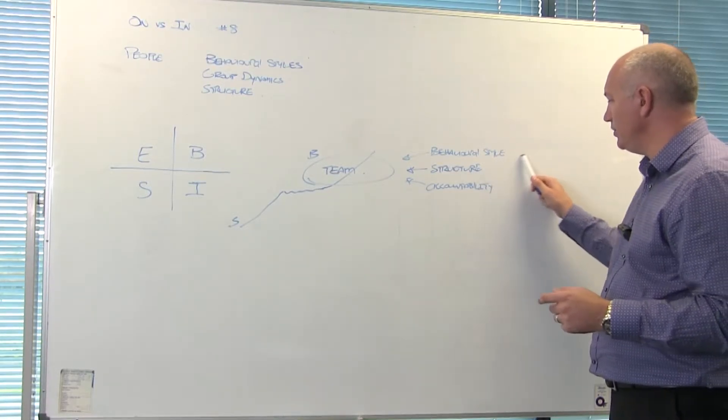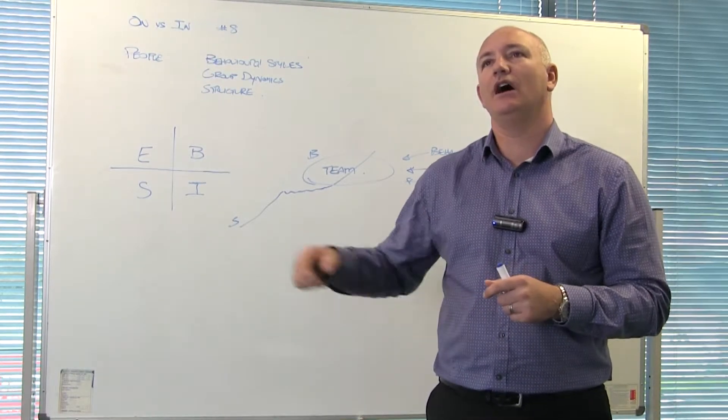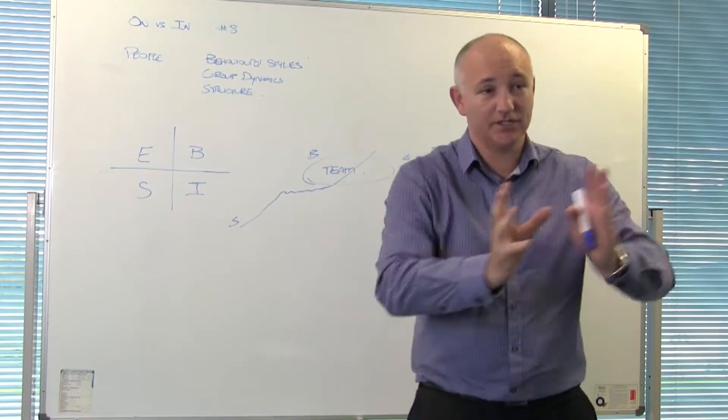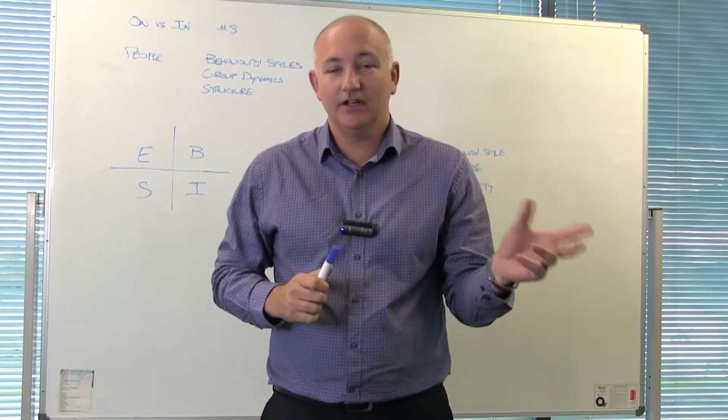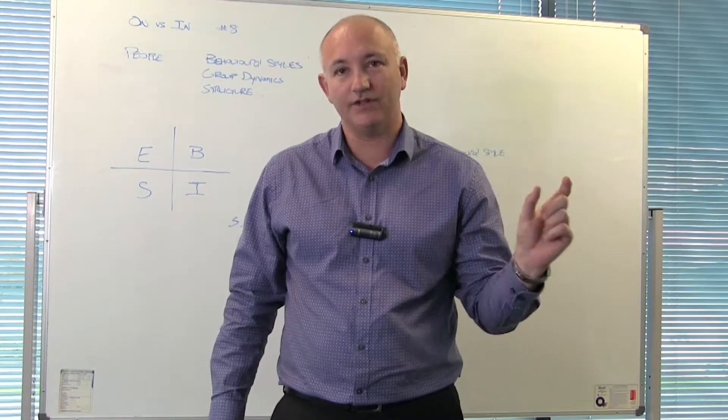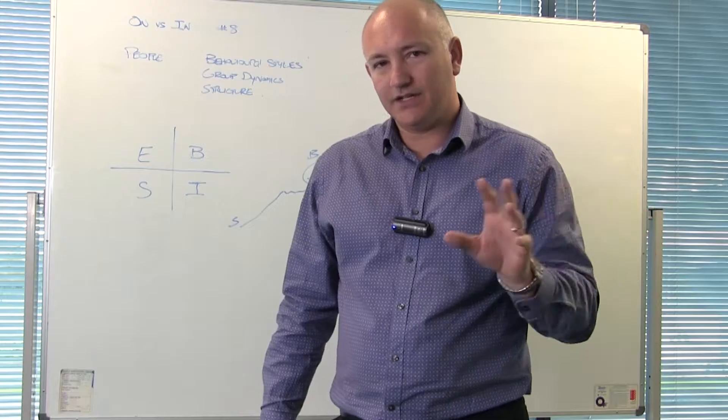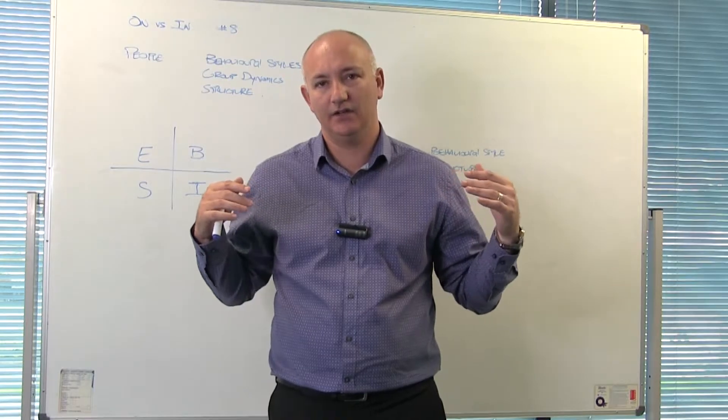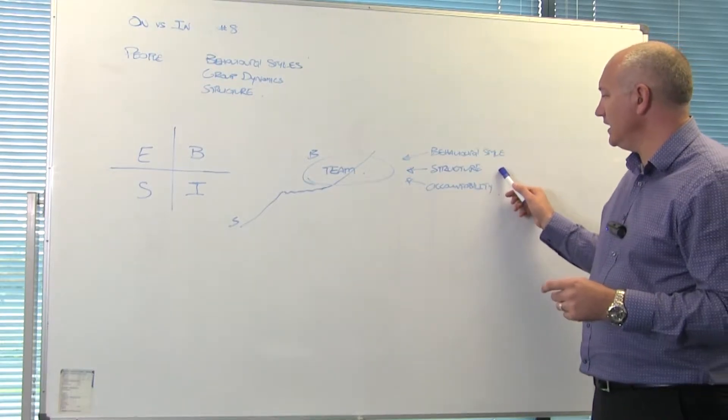So you build structure around the person. You have structure for the function. Quite often what happens is people hire somebody, they hire a GM thinking that GM is going to bring all the systems with them and that's that problem solved. And now I can just exit the business and go and live on an island somewhere. It'd be nice if you do manage to find the GM with all of the systems already with them. More often than not, that doesn't happen that way. We're actually as a business owner responsible for identifying the missing systems and implementing them in the business.